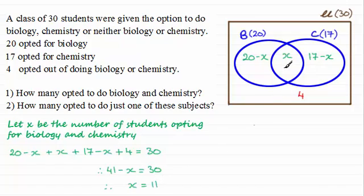And now we can fill our values in. For x here we've got 11. For this region 20 take away 11 gives us 9. 17 minus 11 here gives us 6. So we've got the values of the four regions. And now we're in a position to answer these questions. So just put up here answers.